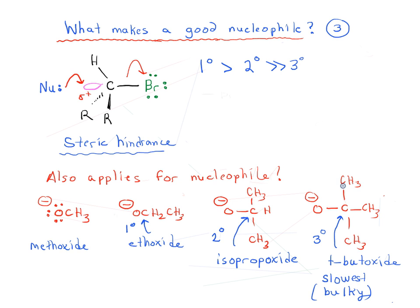So this is actually going to be the slowest because it is a very bulky nucleophile. We say bulky is the word of choice here in that we have three CH3 groups, and they take up a lot of space. So it is a bulky nucleophile, whereas this is going to be the fastest, methoxide, because it's non-bulky.